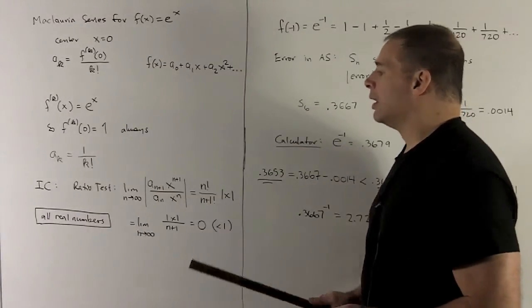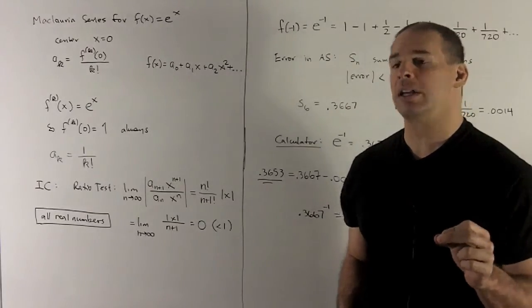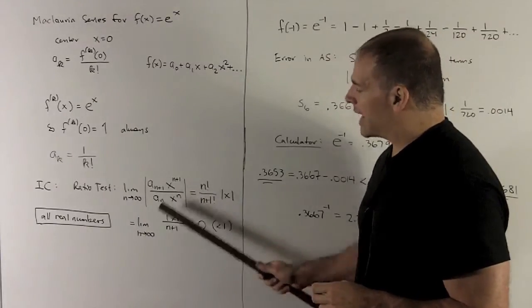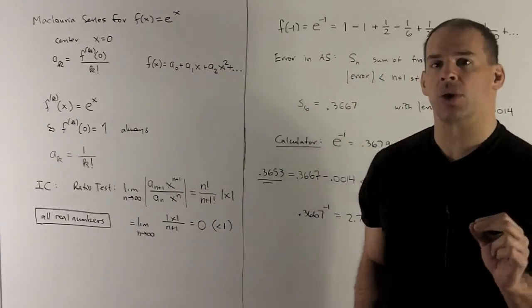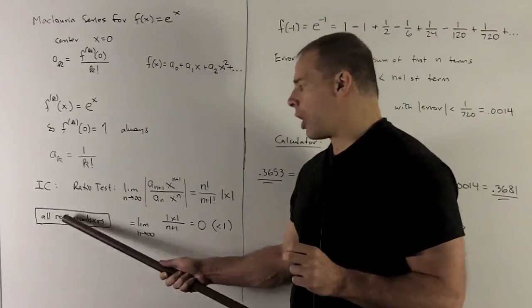So since this is zero, ratio test just checks, is your answer strictly less than one. In this case, it will be and this was not affected at all by what x that you chose. So it's going to be true for all x. So our domain is going to be all real numbers.